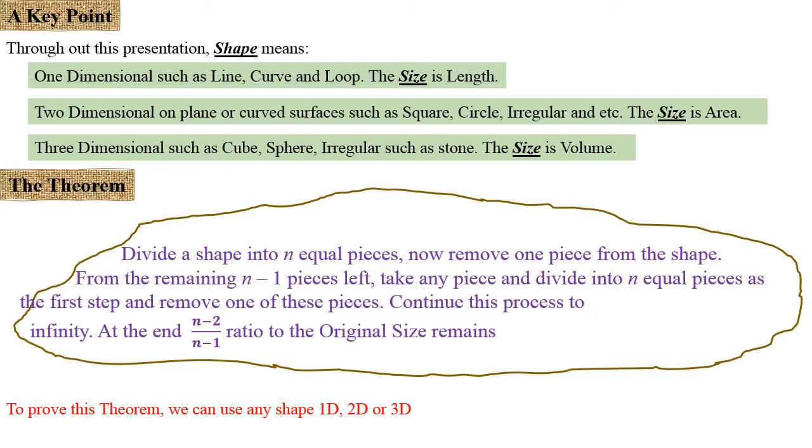What is the theorem? The theorem simply is as follows: If you have a shape and divide it into n equal pieces, then remove one piece from the shape.